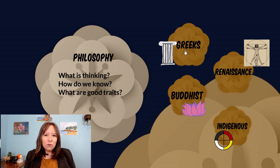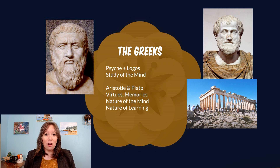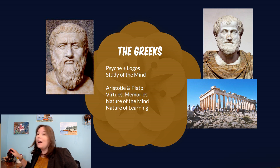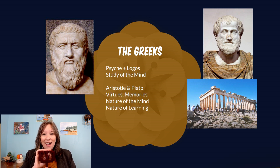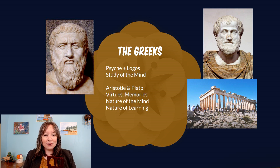Now where most Western psychologists start this discussion is with the Western philosophers from ancient Greece. In particular we like to talk about Plato and Aristotle. The name psychology actually goes back to ancient Greek — the Greek letter psi comes from the Greek word psyche to mean the mind, and logos refers to the study of. So psychology is the study of the mind.